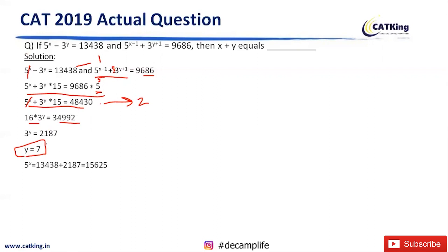Now we can put this in any equation we want. So if we are putting this in the first equation, we will get 13438 plus 3 raised to 7, which is 2187 only. So the value of x comes out to be 6. The value of x plus y is 13. Simple.